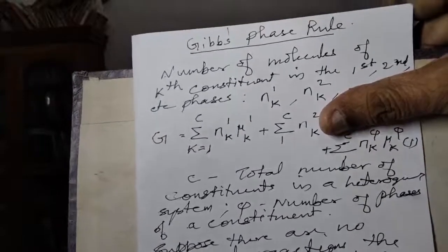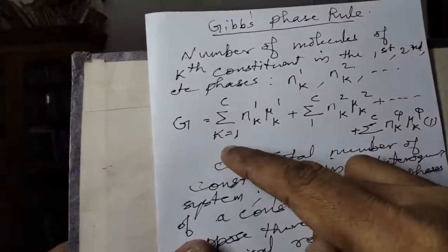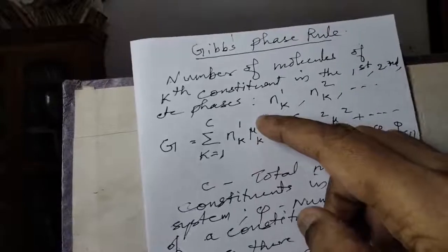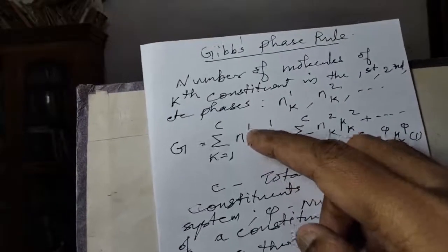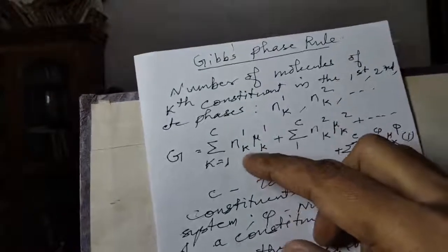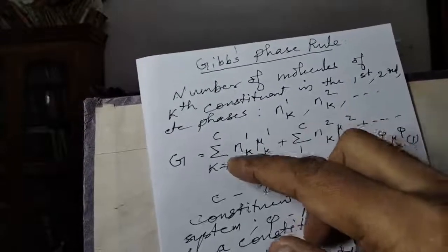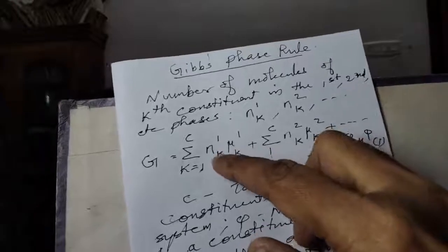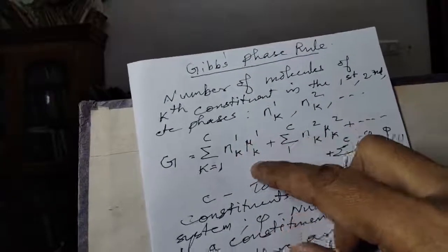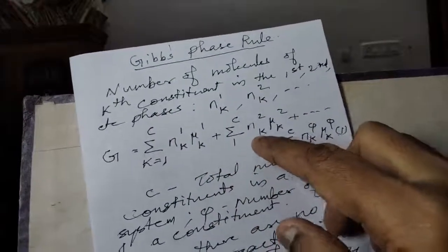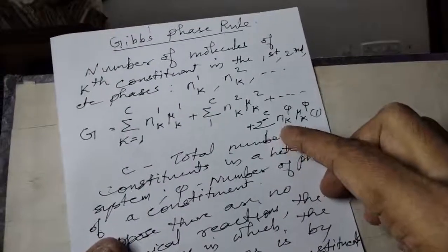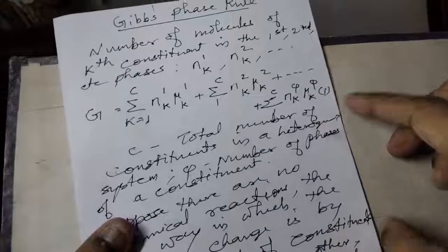The first component of the total Gibbs free energy — the Gibbs function — in phase one is: sigma over k equals one to c of N_k1 times mu_k1. So this is N_11 mu_11 plus N_21 mu_21 plus ... plus N_c1 mu_c1. Similarly for three phases and c constituents, one single phase gives a sigma of N_k2 mu_k2, plus etc., sigma N_k5 mu_k5. Let this be equation number one.